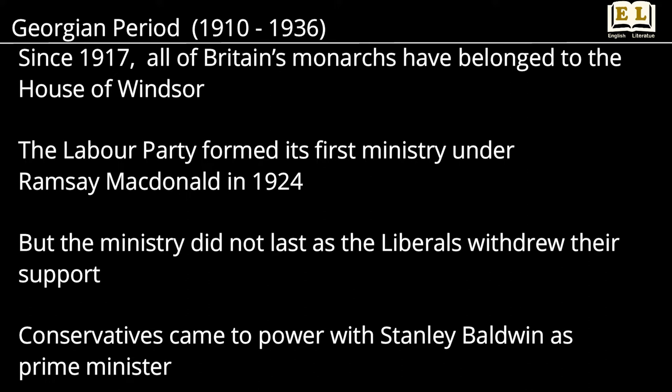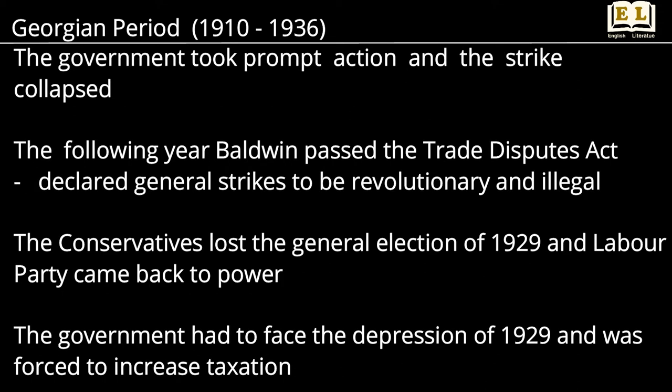The Labour Party formed its first ministry under Ramsay MacDonald in 1924, but the ministry did not last as the Liberals withdrew their support. Conservatives came to power with Stanley Baldwin as Prime Minister. It was during this period that a general strike was called by trade unionists in 1926, but the government took prompt action and the strike collapsed.